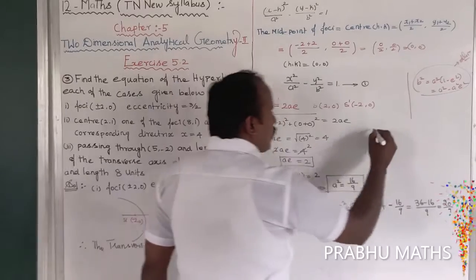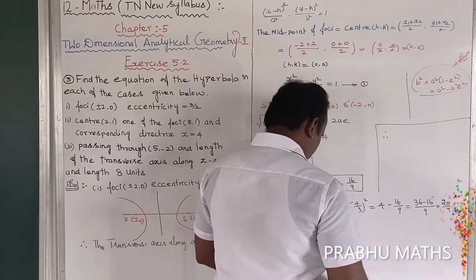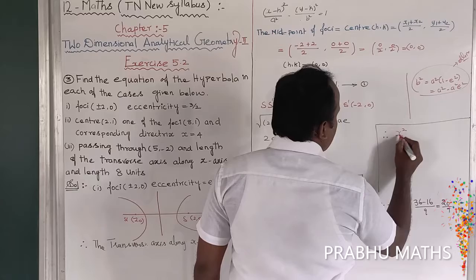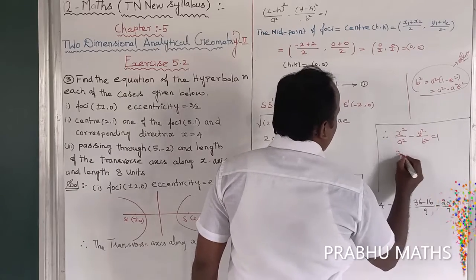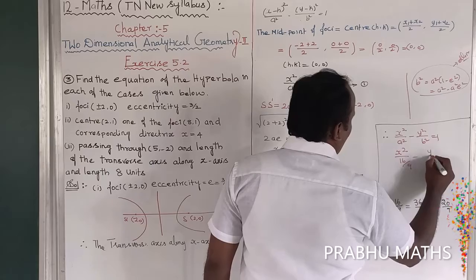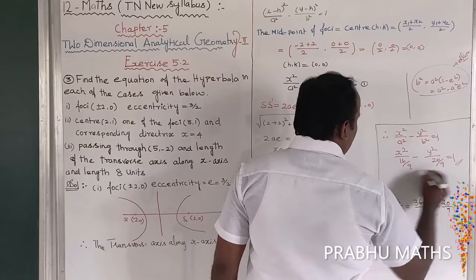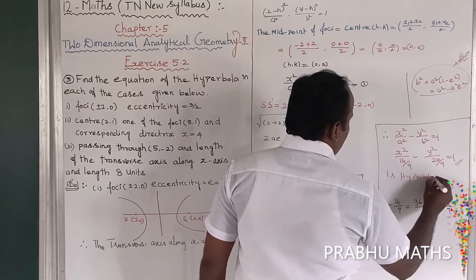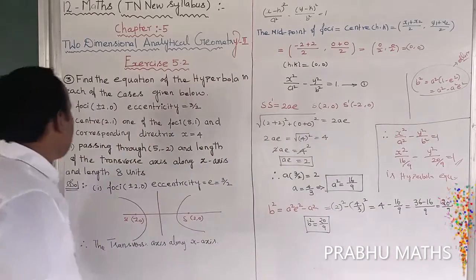Substituting into equation number 1: x² / (16/9) − y² / (20/9) = 1. That is the hyperbola equation — the answer for the first subdivision. Next, we move on to the second subdivision.